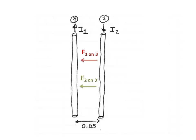Between the two wires, the force that 1 exerts on 3 would point to the left, and the repulsion that 2 exerts on 3 would also be to the left. So both forces point in the same direction, and they cannot cancel there either.